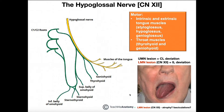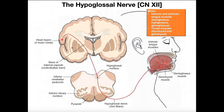When the hypoglossal nerve is functioning normally, it innervates the intrinsic and extrinsic tongue muscles and a couple of throat muscles. But if there is a lesion, we must determine whether it is an upper motor neuron lesion — a lesion in the corticobulbar tract — or a lower motor neuron lesion, meaning physical damage to the actual hypoglossal nerve itself.